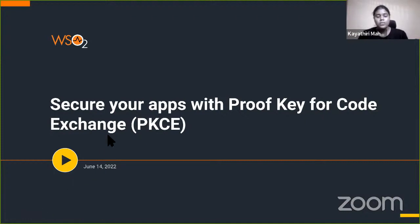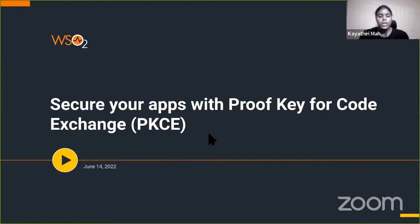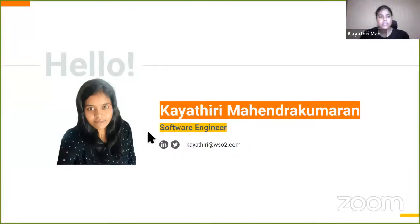Hi everyone. Welcome to the end of the episode of Identity 15 powered by WSO2. Today's topic is how to secure your application with Proof Key for Code Exchange, which we can pronounce as PKCE. In this episode, we will see how we can integrate the authorization code with the PKCE flow in order to secure your application from authorization vulnerabilities. I'm Gayathri Magintrakumaran, working as a software engineer at WSO2 from the Identity and Access Management team.